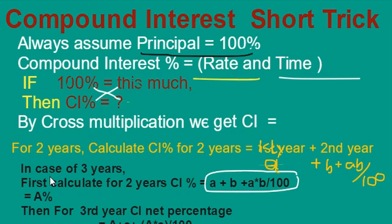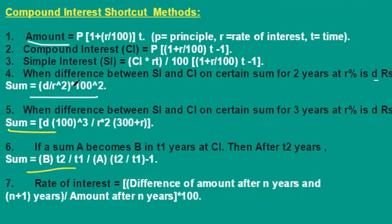In case of 3 years, if they ask you to calculate compound interest for 3 years, we have to first calculate for 2 years and then for the third year. In some problems, we have to use these formulas to get quick answers. For example, if the question gives the difference between simple interest and compound interest for 2 years with a given rate percent and difference amount, we have to use this formula to get the principal amount.